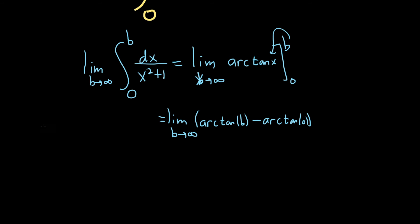To figure out what this limit is, it's really important to be familiar with the graph of the arctangent function. The graph of arctan has a horizontal asymptote at negative π over 2 and also at π over 2.